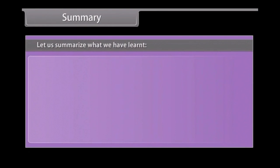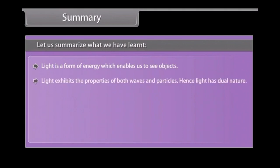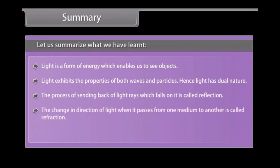Summary. Let us summarize what you have learned. Light is a form of energy which enables us to see objects. Light exhibits the properties of both waves and particles. Hence light has dual nature. The process of sending back of light rays which falls on it is called reflection. The change in direction of light when it passes from one medium to another is called refraction.